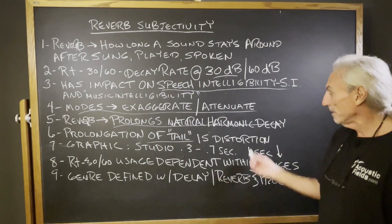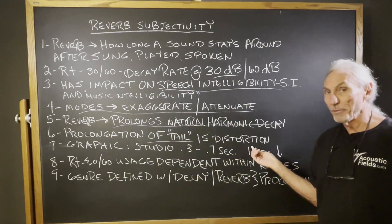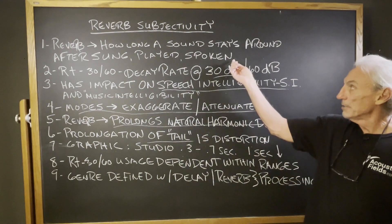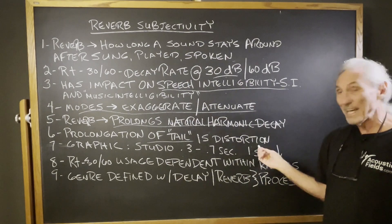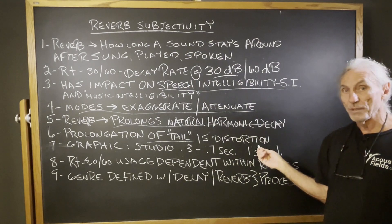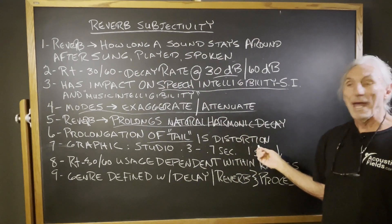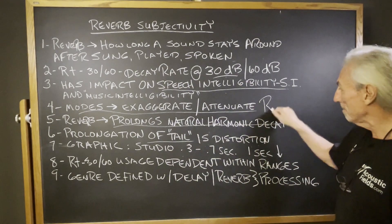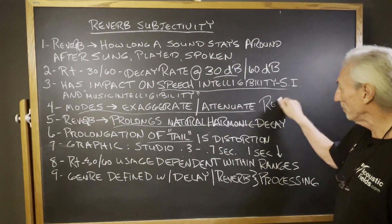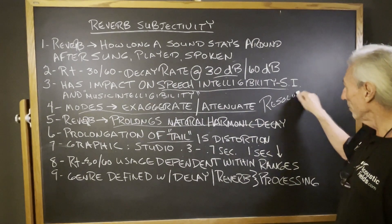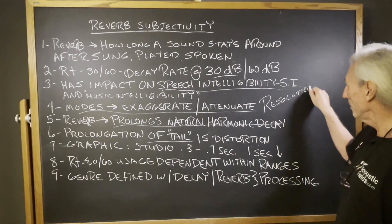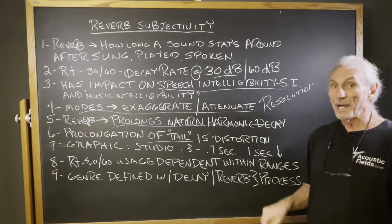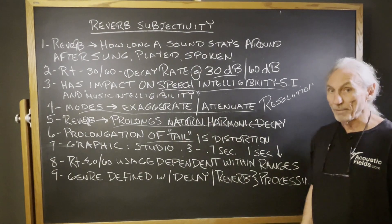We have to look at the tail. If we hold that tail too long — if it stays around in the room too long — that's distortion. And that has a big impact on resolution. So reverb and resolution go kind of hand in hand.